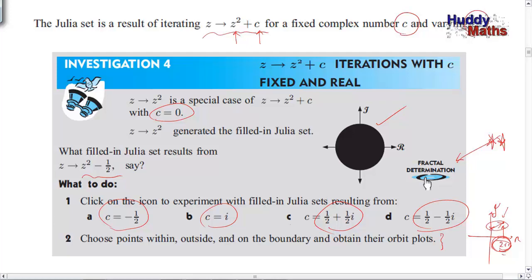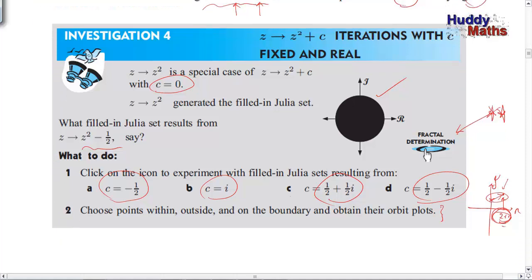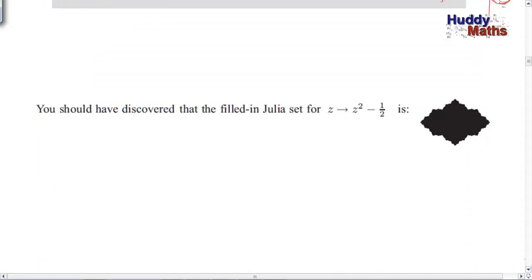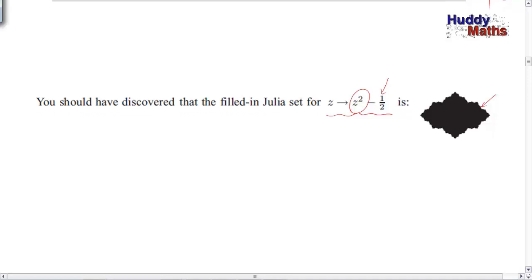Have a go then. I'm going to ask you whether you got this result about z² - ½. Did you get that? You should have discovered that the filled-in Julia set for z going to z² - ½ — keeping this fixed and having a lot of different z's — gives a filled-in set where the points inside are converging, and we've got that fancy boundary shape. Can you see the self-similar nature of that? The iterative procedure is reiterating similar patterns. It's a very interesting area of mathematics.